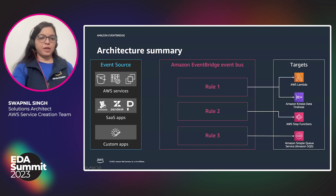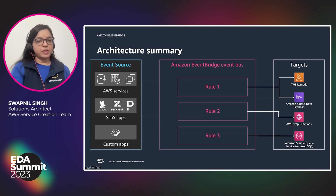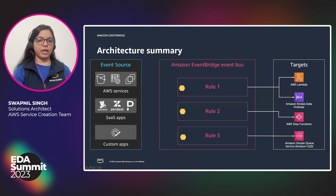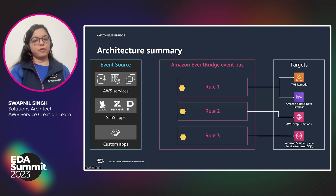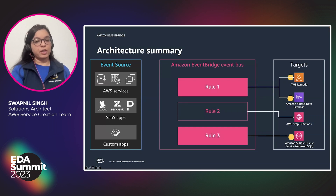This is the architecture summary of everything reviewed so far. We have event sources, EventBridge with an event bus in between, and then the targets. The event starts at the source, is evaluated by all rules on EventBridge, and is forwarded to any rules that validate against that event. The event is then forwarded to the targets associated with the matching rule.